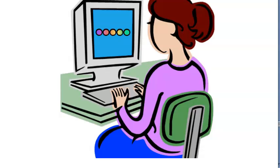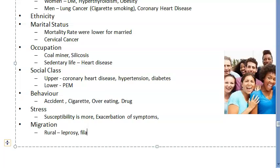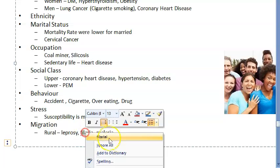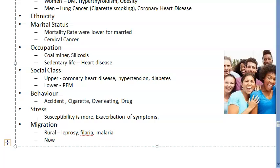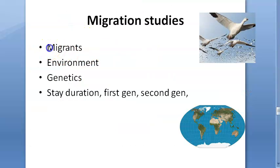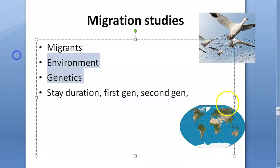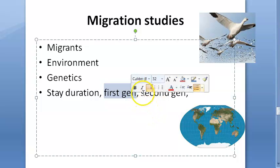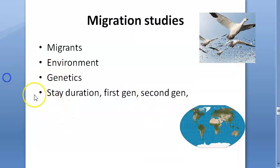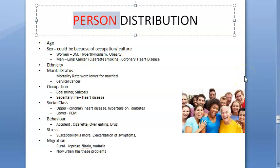Lastly, migration: people who migrate will either bring diseases with them or catch new diseases in the new place. Earlier, rural problems were like leprosy, filariasis, and malaria, but now because of migration from rural to urban, patterns are changing. We want to study whether migrants are affected by the new environment or by their own genetics. You should also consider duration of stay — short term, long term, permanent — and whether the first and second generations are affected by environment or genetics.